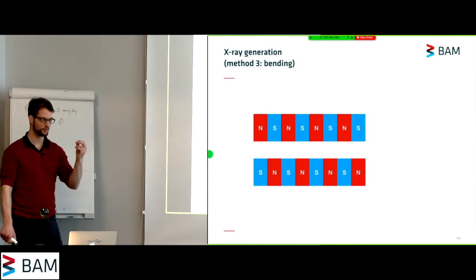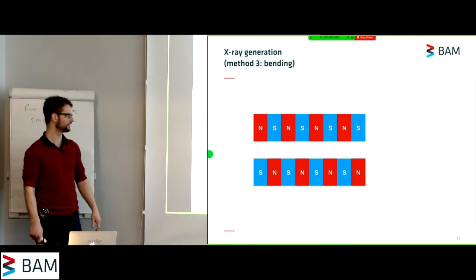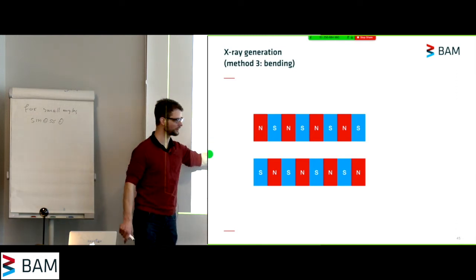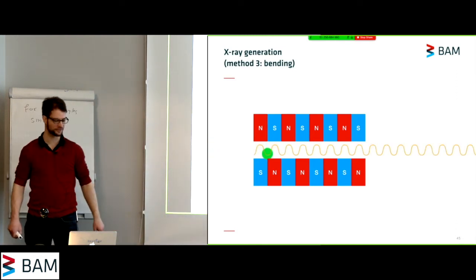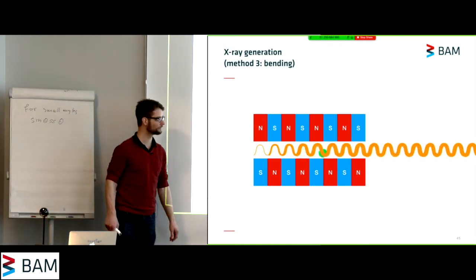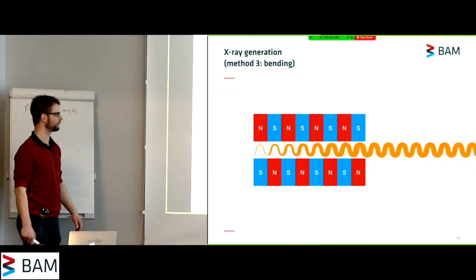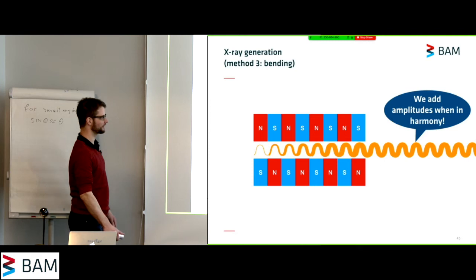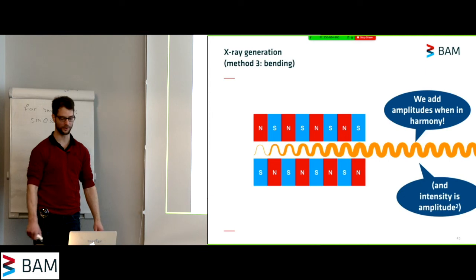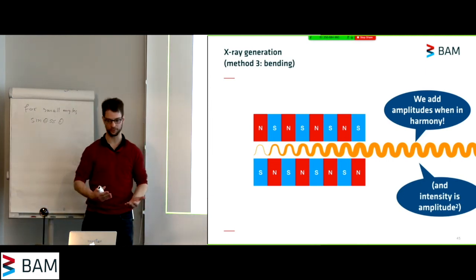However, if you are clever, and you put these magnets in exactly the right distance from each other, with the right magnetic field and the right period between your magnets, you can make it so that every photon that is emitted by the electron is in phase with all of the other photons. And for those of you who are familiar with physics, this means that you don't add intensity, you actually add amplitudes, and the intensity is the square of the amplitude. So suddenly, with the same number of magnets, you have a lot more photons coming out.